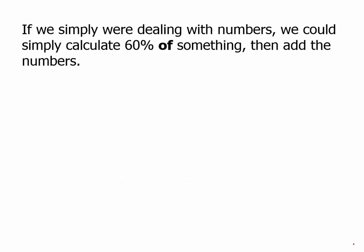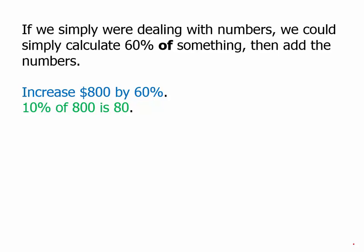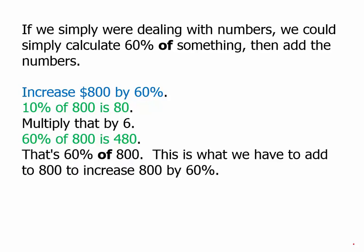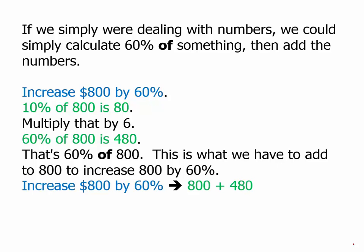If we're simply dealing with numbers, we can do the calculation directly. If we wanted to increase 800 by 60 percent, first we'd find 60 percent of 800. Ten percent of 800 is 80, so we multiply by 6: 60 percent of 800 is 480. That gets added to the original: 800 plus 480 is 1280. So when we increase 800 by 60 percent, we get 1280 — all the original 800 plus an additional 60 percent of that original.